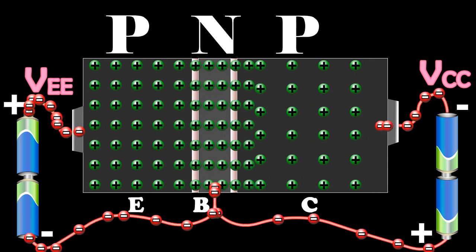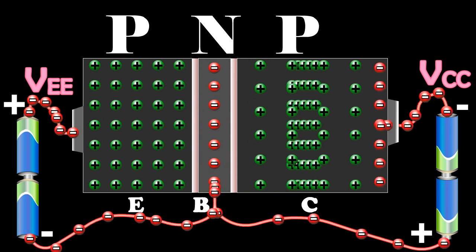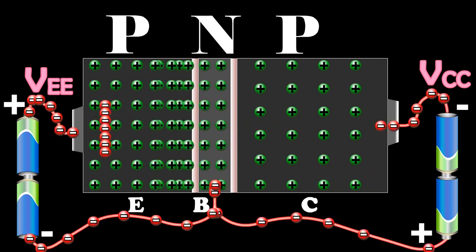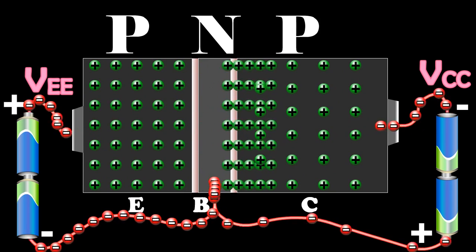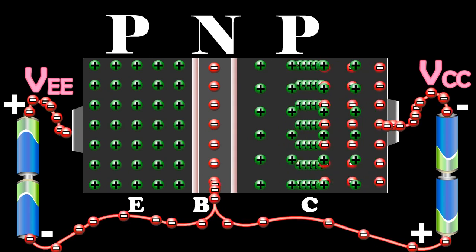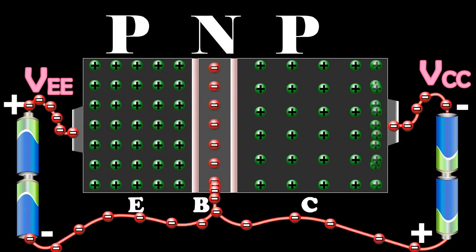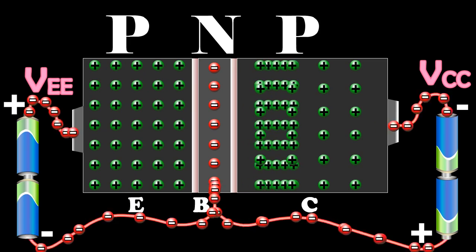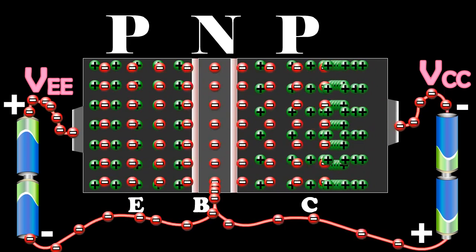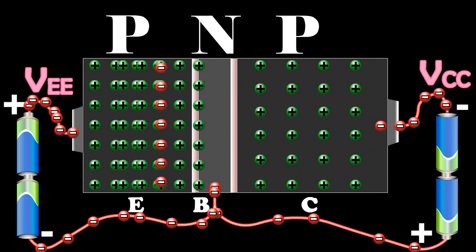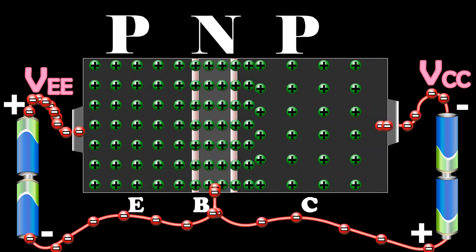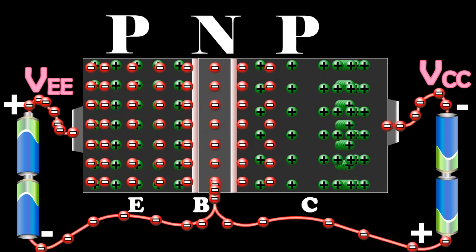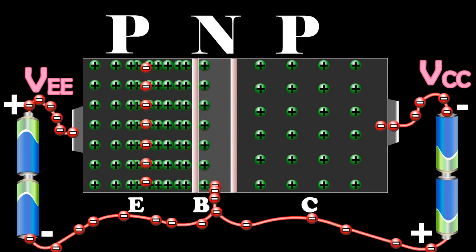The remaining holes which do not undergo recombination in the base reach the collector. These are neutralized by an equal number of electrons flowing from the negative terminal of the battery VCC into the collector. At the same time, an equal number of electrons flow from the negative terminal of VEE and reach the positive terminal of VCC. The flow of holes per second from the base to the collector gives rise to the collector current IC. In the external circuit, it is due to the flow of electrons from the negative terminal of the battery VCC into the collector.